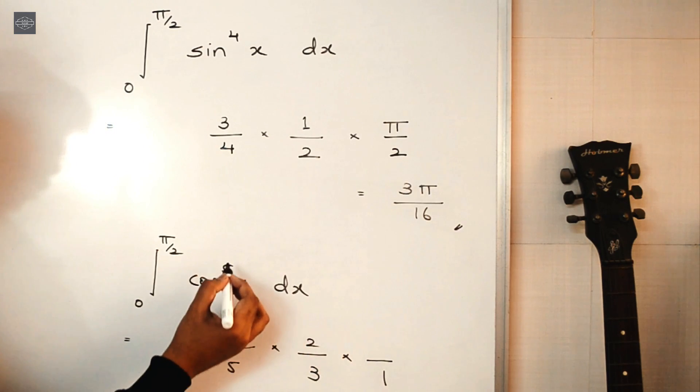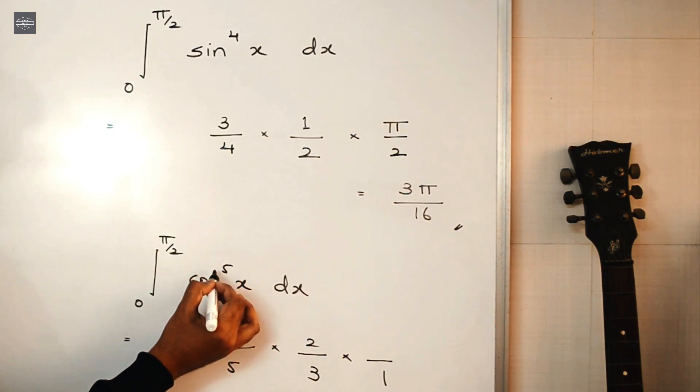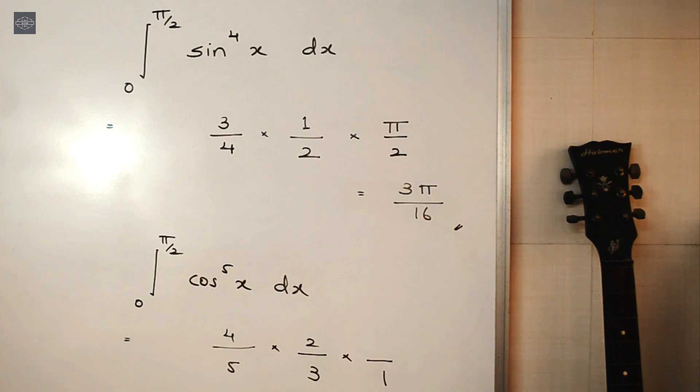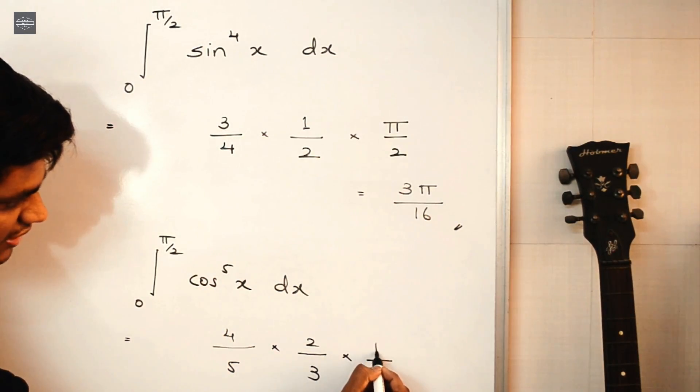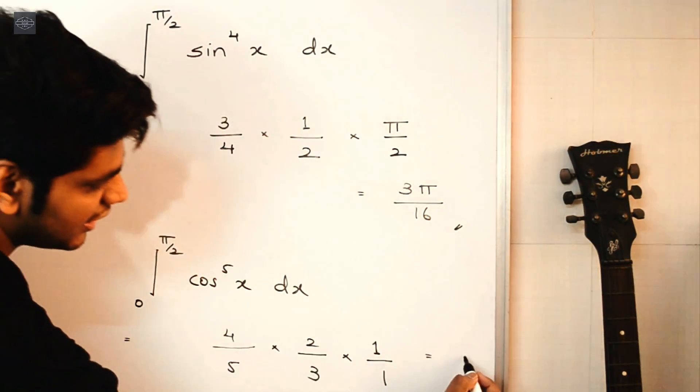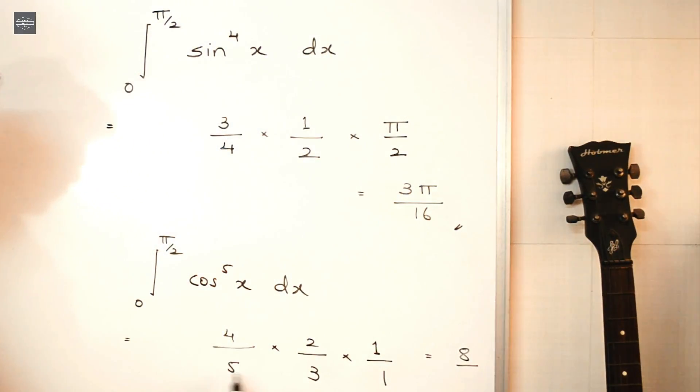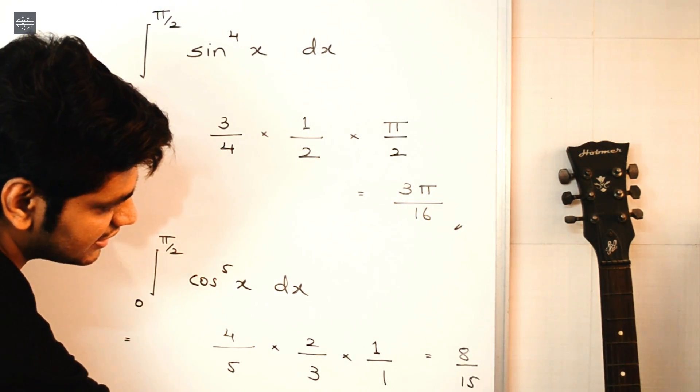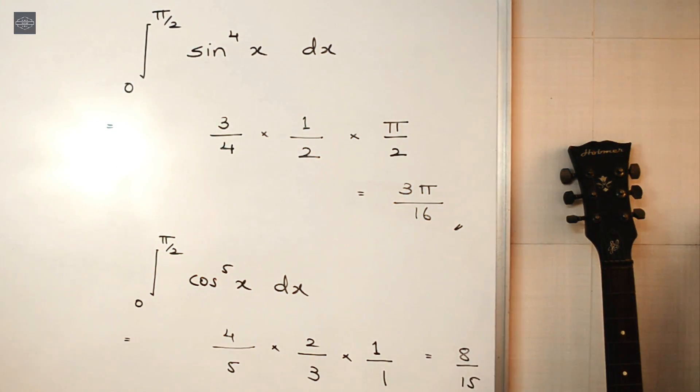So after reaching this point, observe the power here. Now this power is an odd number. So as I have said, if the power is an odd number, simply multiply by 1 at the end. So now just calculate this. This will be 4 twos are 8, upon 5 threes are 15. And that's it. So 8 by 15 is the final answer.